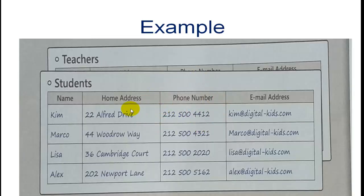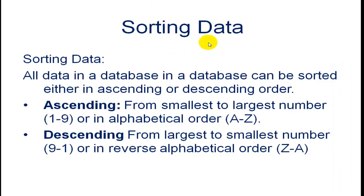Sorting data: All data in a database can be stored either in ascending or descending order. Ascending means from smallest to largest — number one to nine, or in alphabetical order A to Z. Descending means from largest to smallest — number nine to one, or in reverse alphabetical order Z to A.